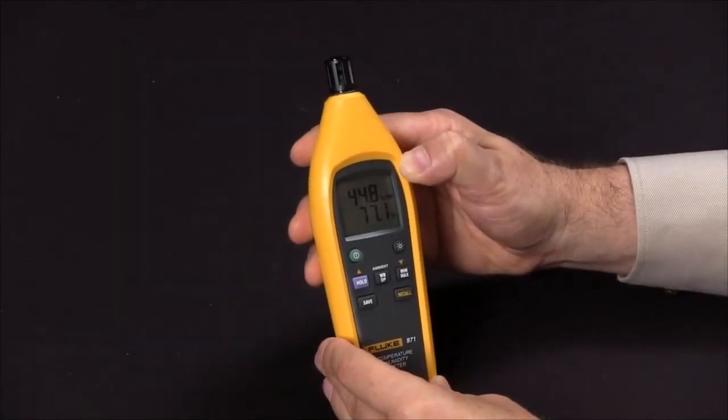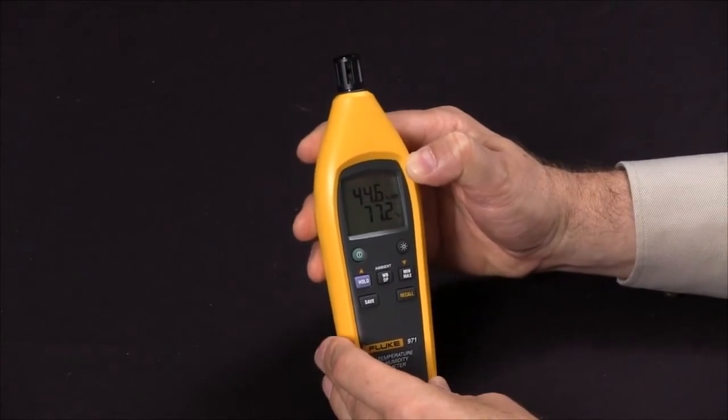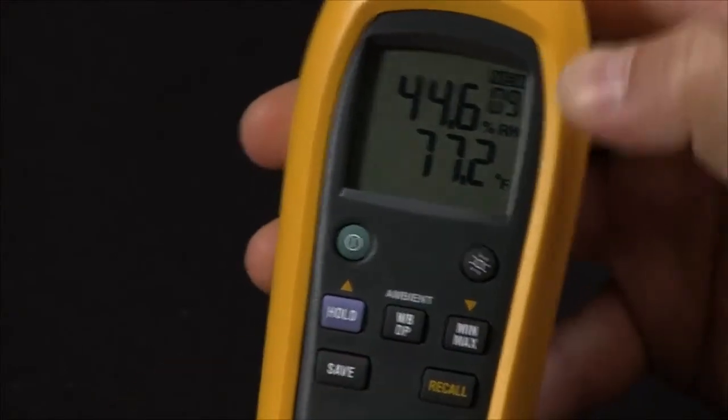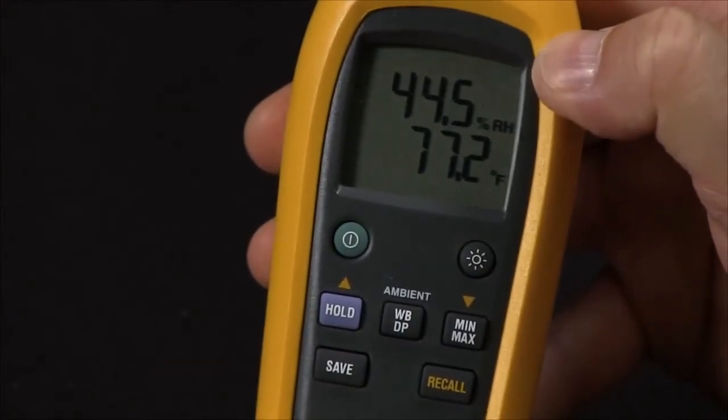Another key feature of the 971 is that you can store up to 99 readings. To save the reading, simply press the save button and a numerical sequence will be assigned to that reading.